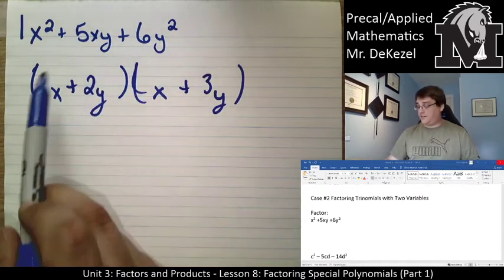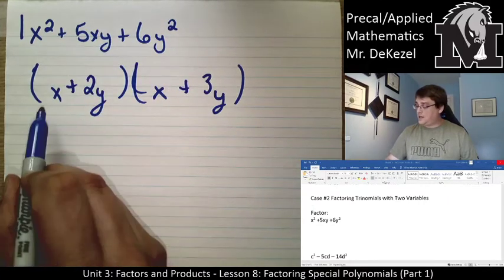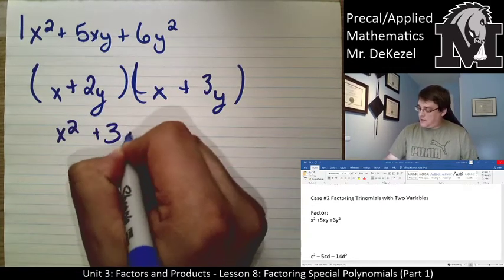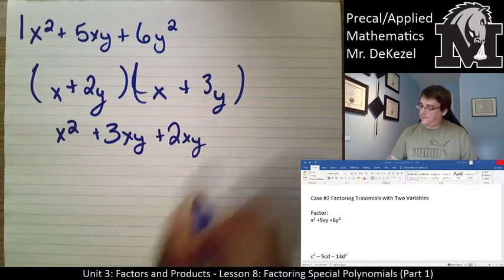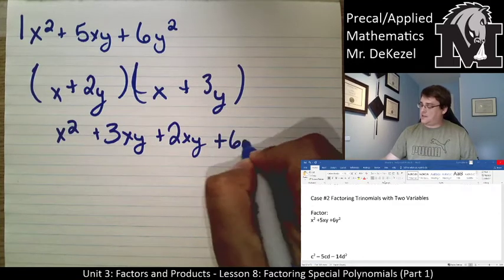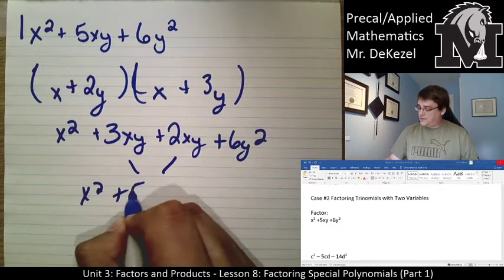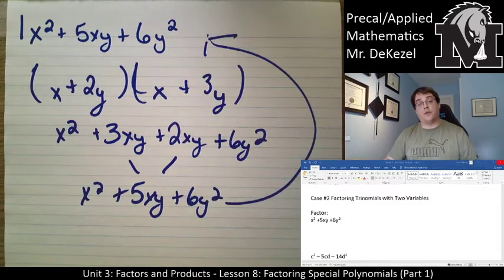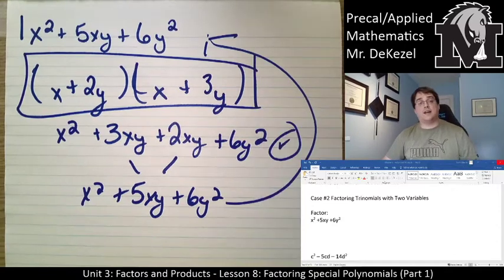Let's check by FOILing: x times x is x squared. x times 3y is 3xy. 2y times x is 2xy. 2y times 3y is 6y squared. Combining like terms: x squared plus 5xy plus 6y squared — which is exactly what we started with. So the answer (x + 2y)(x + 3y) is correct.